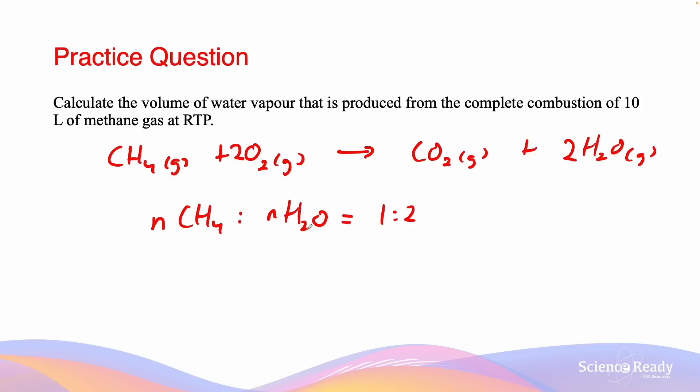However, we know according to Avogadro's law that when temperature and pressure are held constant, which is the case at RTP, the ratio of volumes are also going to be equal to the ratio of their moles. Since the ratio of moles of CH4 to H2O are 1 to 2, we also know that the volume of CH4 to the H2O must also equal to 1 to 2. And so that means the volume of H2O is going to equal to 10 times 2, which means a total of 20 liters will be produced from complete combustion of 10 liters of methane gas.